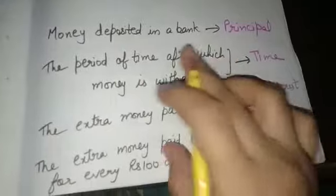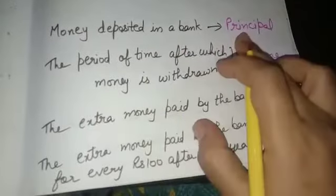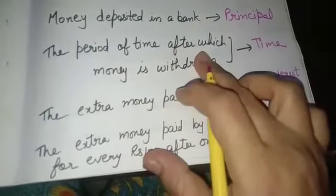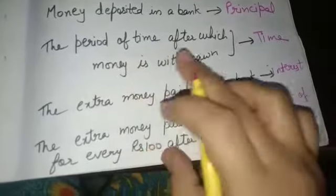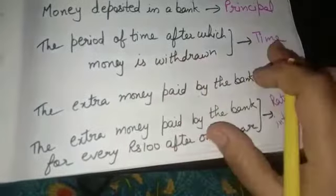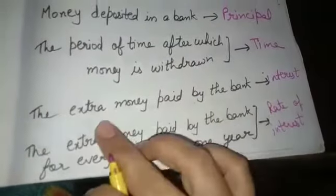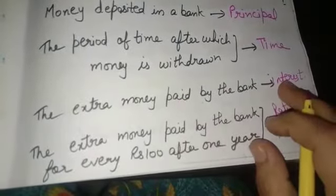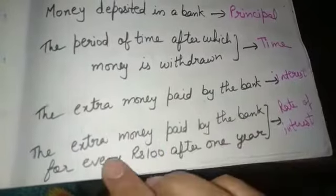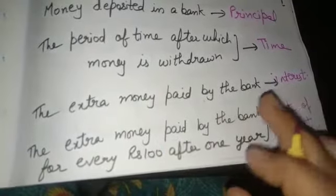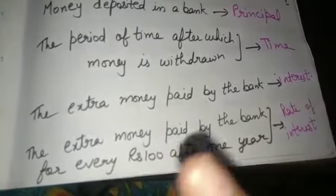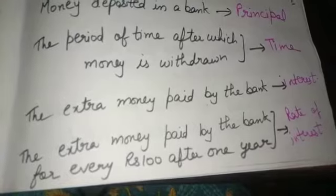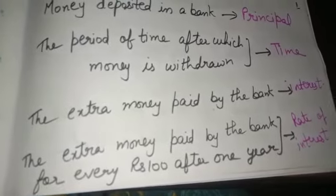These are the new terms. Money deposited in a bank is called principal. The period of time after which money is withdrawn is called time. The extra money paid by the bank is called interest. And the extra money paid by the bank for every 100 rupees after one year is called rate of interest.